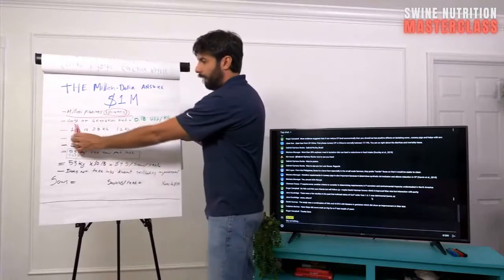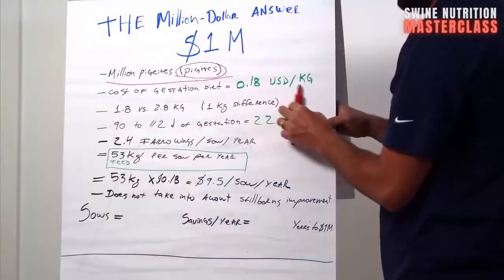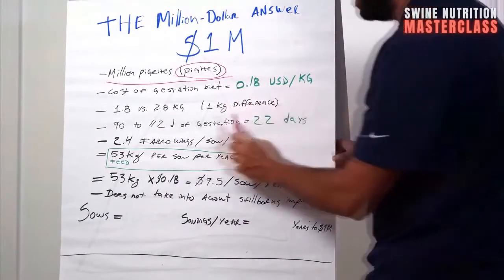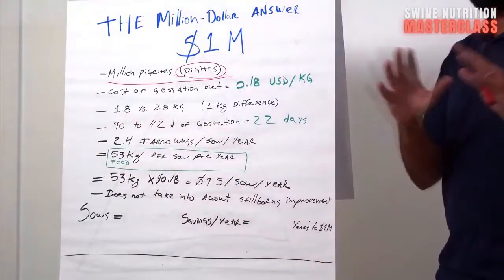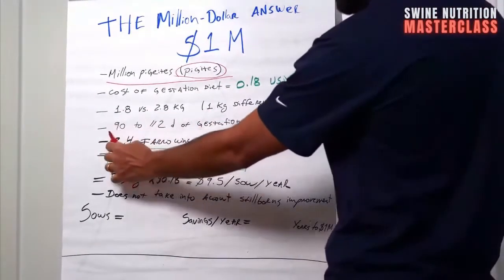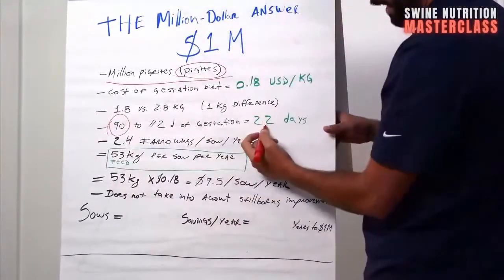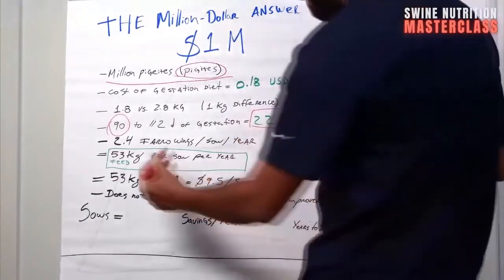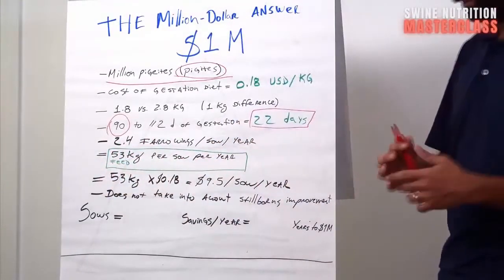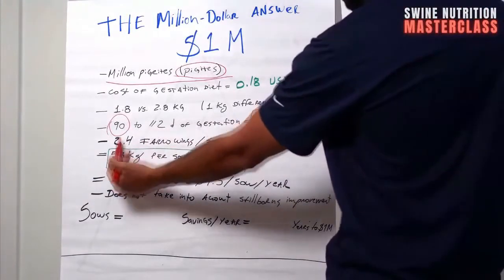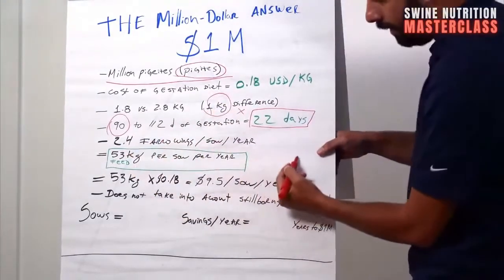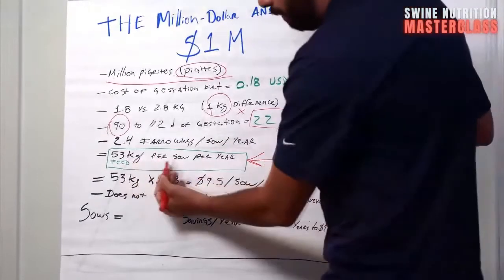All right. So let's look at this. The cost of gestation diet, I'm just putting a number here, 18 cents of US dollar per kilogram. Might be a little more, might be a little less. Just a ballpark. And if you're feeding 1.8 kg of a corn soy diet versus 2.8, that's a 1 kg difference. From the 90, as many folks like to do, and that's 22 days until day 112. And that's 2.4 farrowings per sow per year. So we're going to multiply that 1 kg right here times 22 days times 2.4. You get right here, 53 kg off-feed per sow per year.